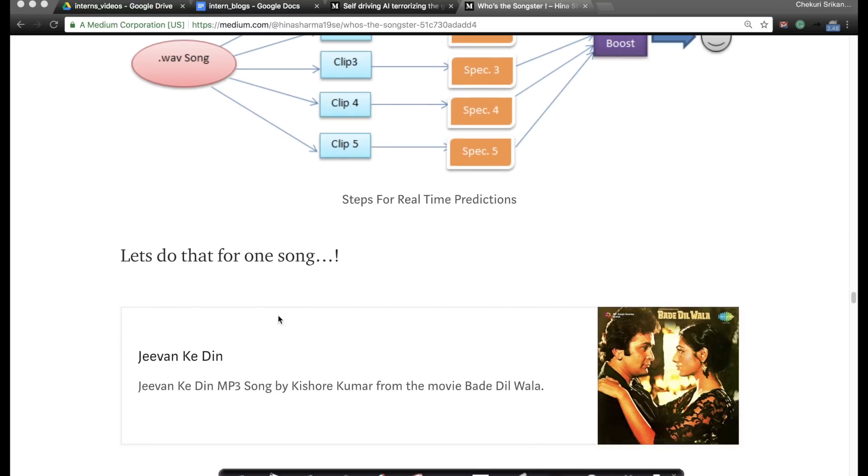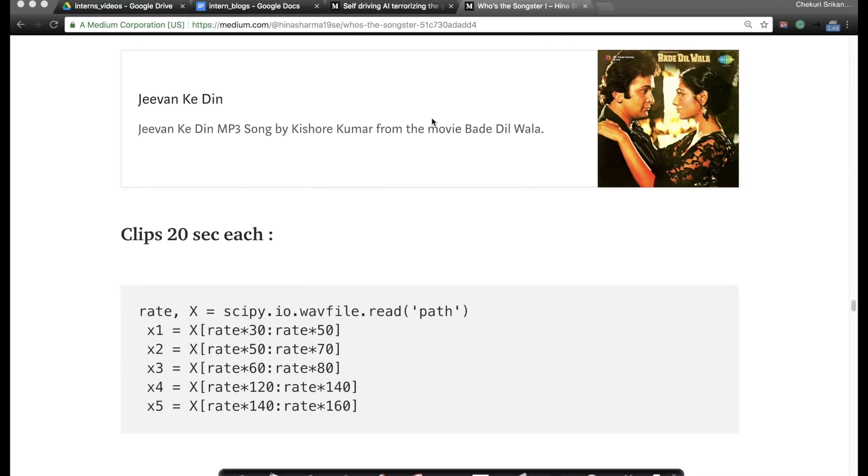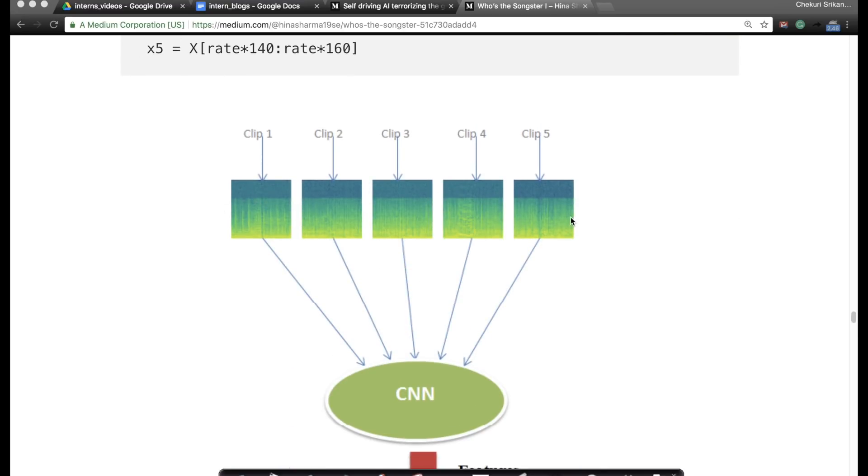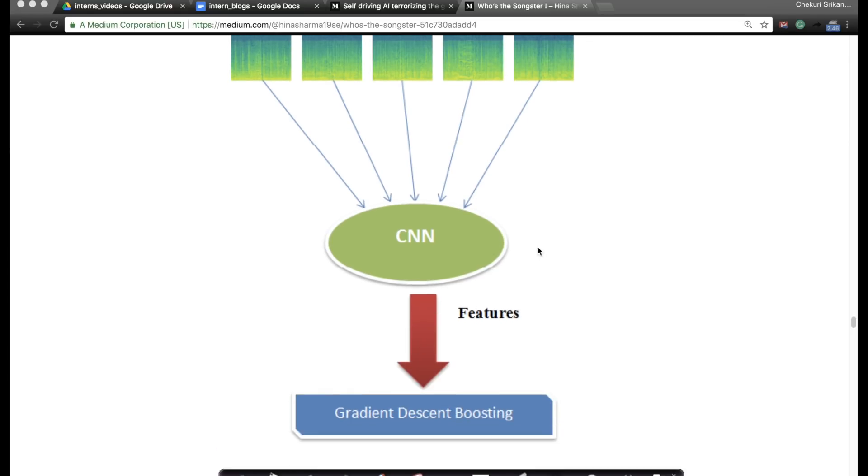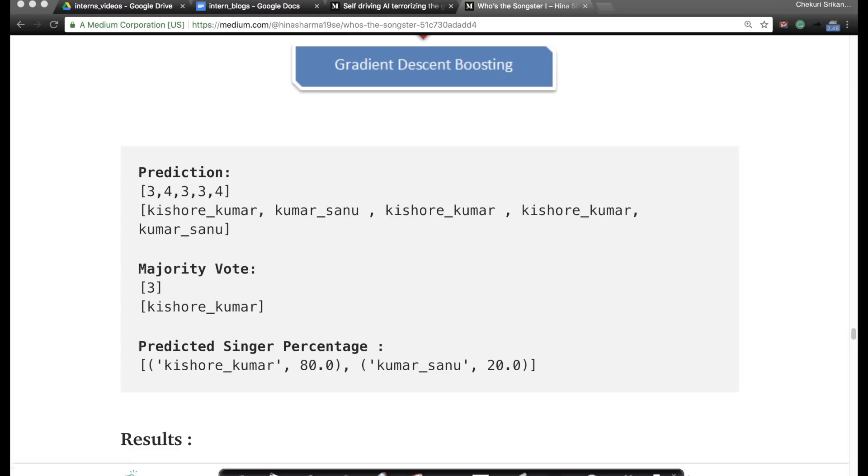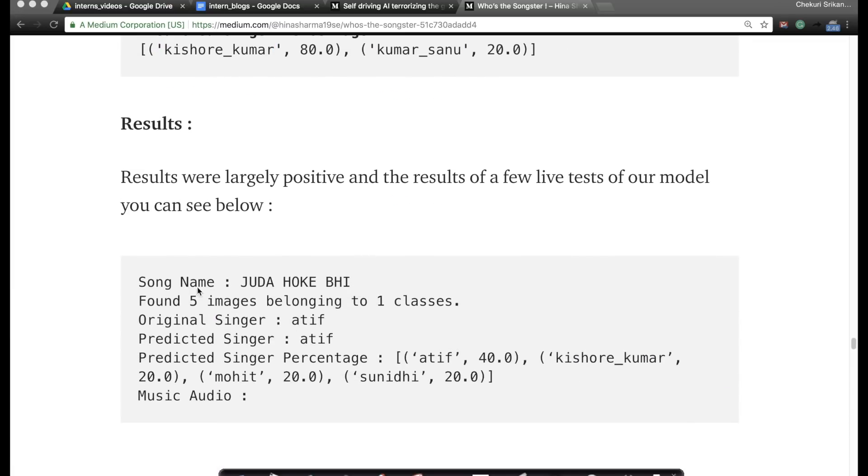Because you're taking multiple clips from the same audio song, even if one of them is not sure, the others will help you work it out. For example, she takes this famous song with five snippets. Each of the clips she converts into spectrograms, gets the convolutional neural network features, then applies XGBoost. At the end, the model says there is 80 percent probability that this song is sung by Kishore Kumar and 20 percent that it's sung by Kumar Sanu. Very interesting piece of work.